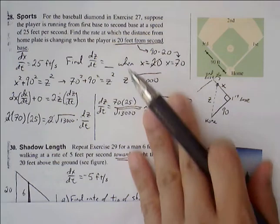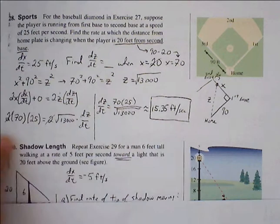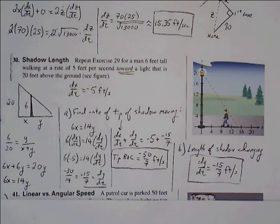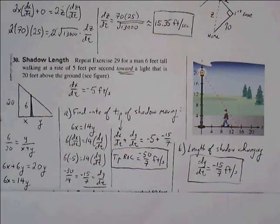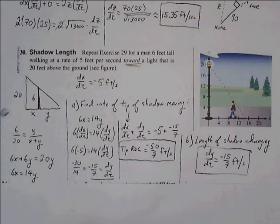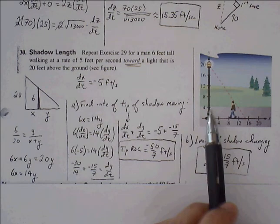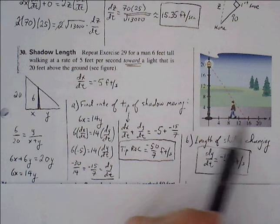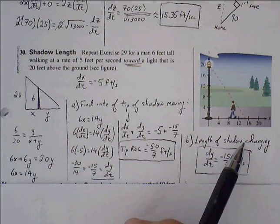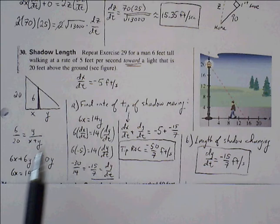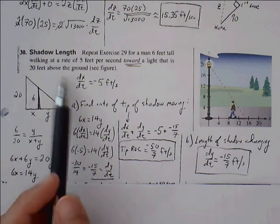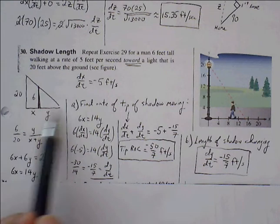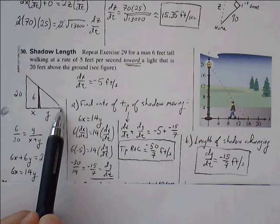Now one more — problem #30, the shadow length problem. A shadow problem usually involves similar triangles. We set up a diagram with a large right triangle and a smaller right triangle inside it.